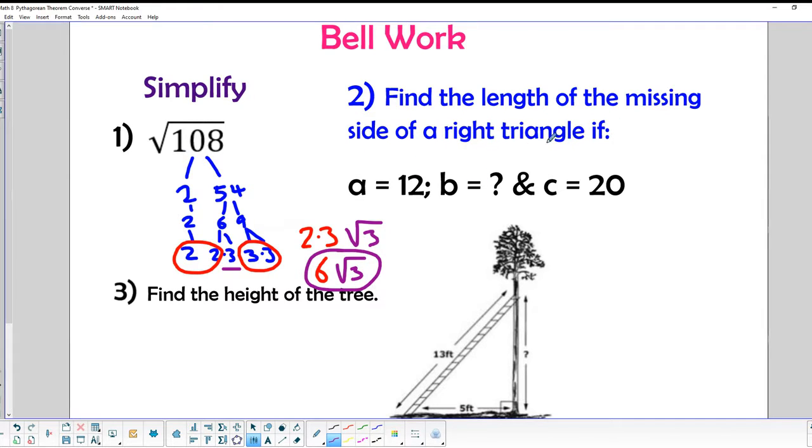Find the length of the missing side of a right triangle. So we're looking for B, which is one of the sides. We remember from the Pythagorean theorem that A squared, or 12 squared, plus B squared, has to equal C squared, which in this case is 20 squared.